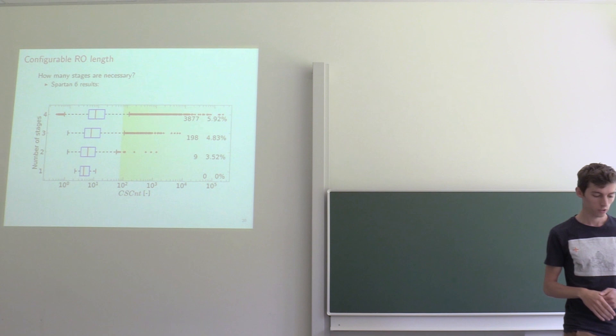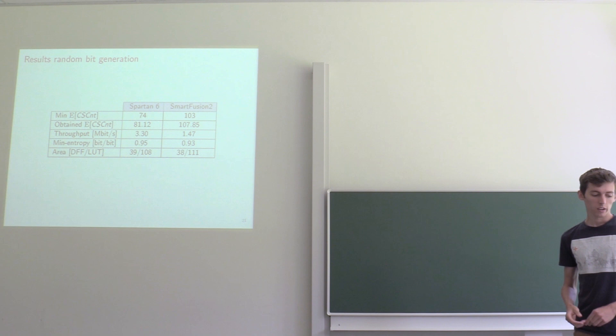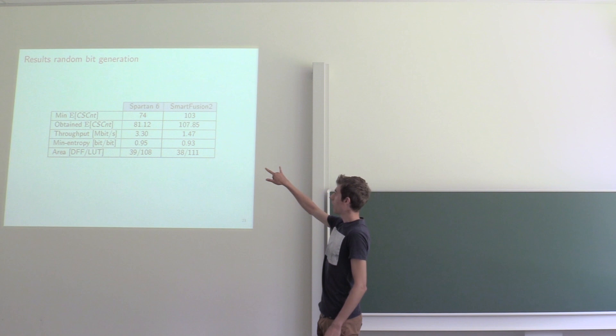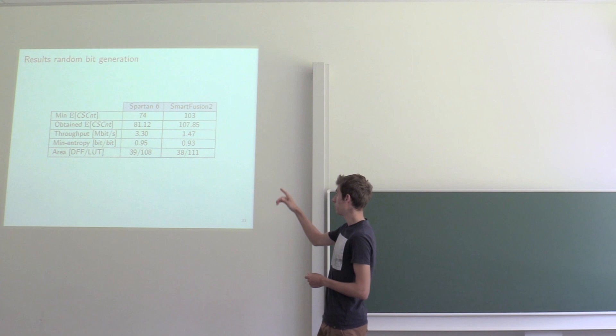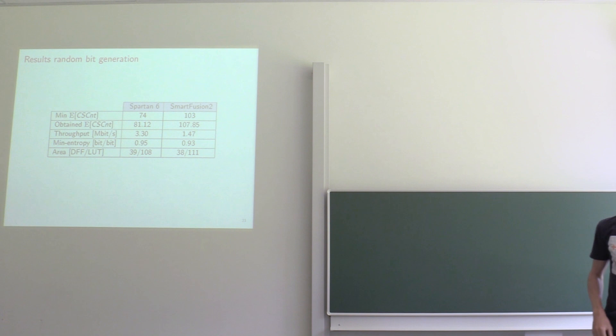So to conclude, we also generated some random bits with it. At the top, you can see the average counter value that was minimally required by the stochastic model. This is lower for the SmartFusion 2 because measurement showed that SmartFusion 2 had a reduced jitter strength than the Spartan 6.